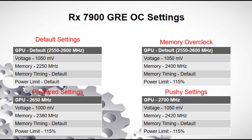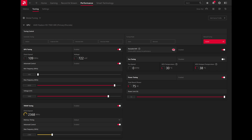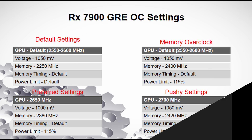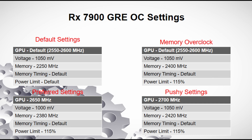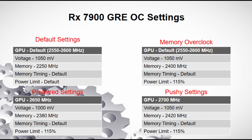The next one is what I call preferred settings: the GPU set at 2650 MHz, a slight undervolt down to 1 volt or 1000 mV, the memory overclocked to 2380 MHz, default memory timing, and the power limit increased to 115%. And the last one is what I'll call the pushy setting: 2700 MHz on the GPU, voltage not undervolted at 1050 mV, memory at 2420 MHz — the bleeding edge of what I could get to run fairly stable — default memory timing, and power limit raised to 115%.